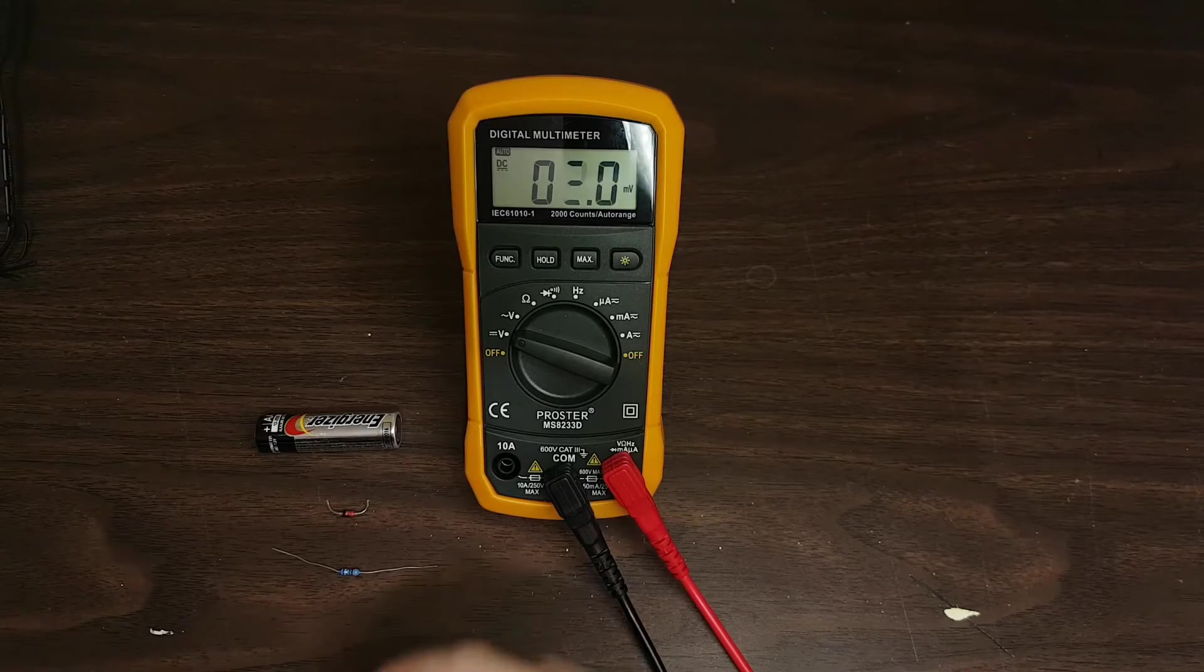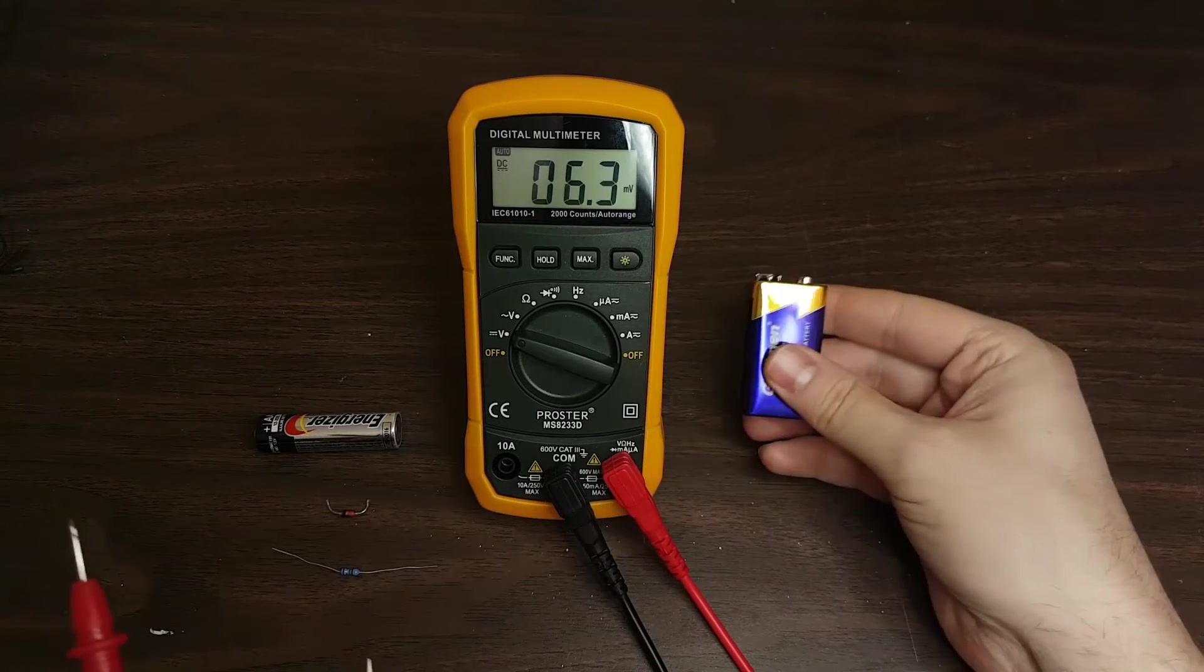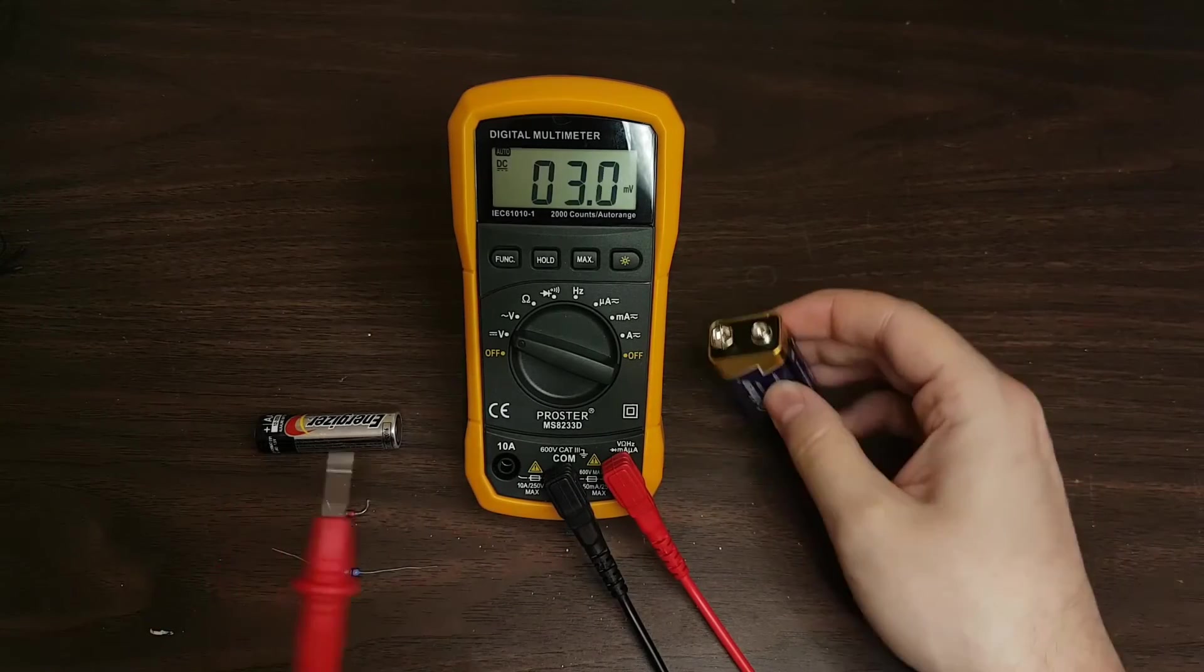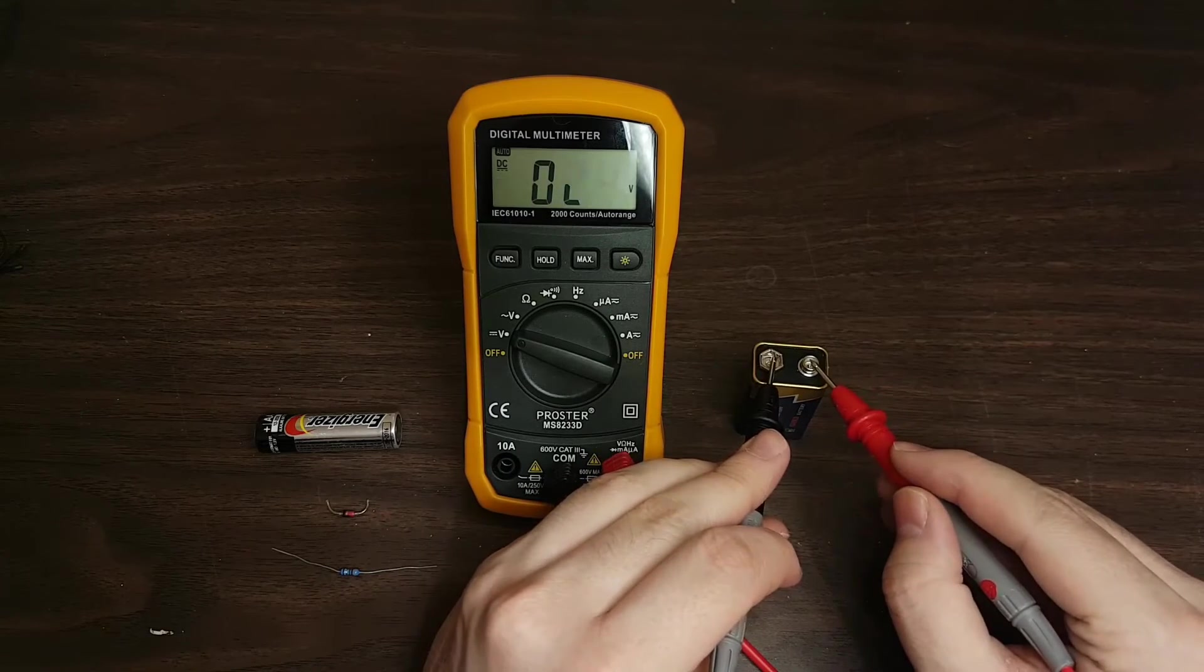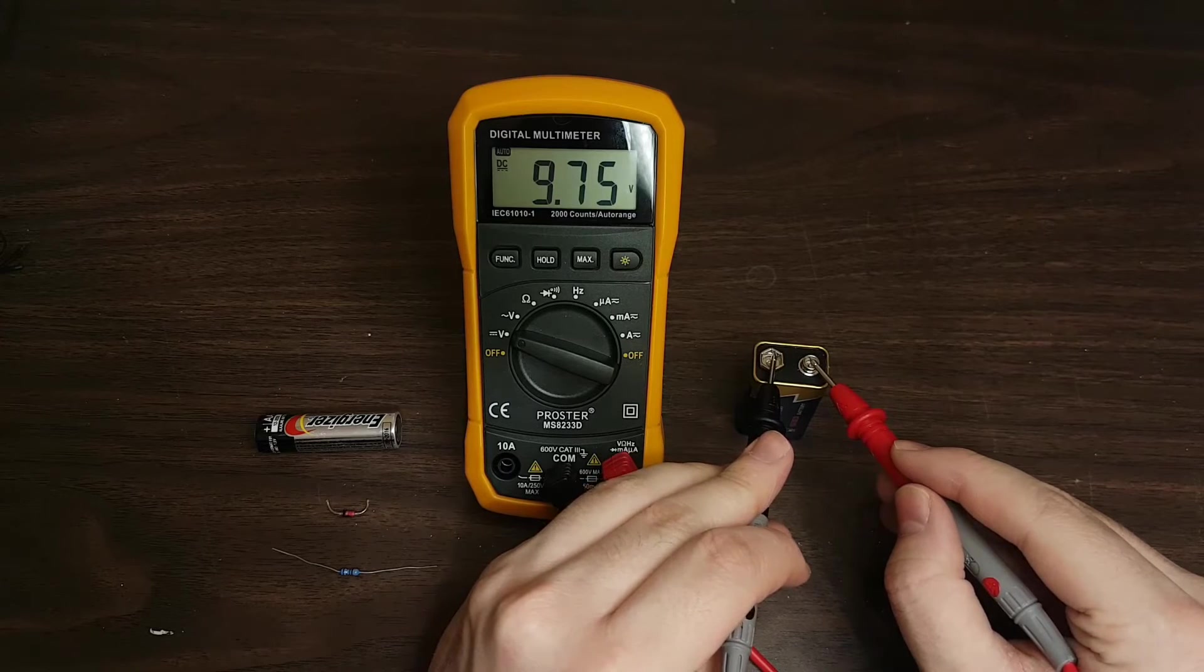It does display overload for a very split second there, and that's just because it hasn't chosen the high enough range yet. So we've got a 9-volt battery here as well, and 9.75.